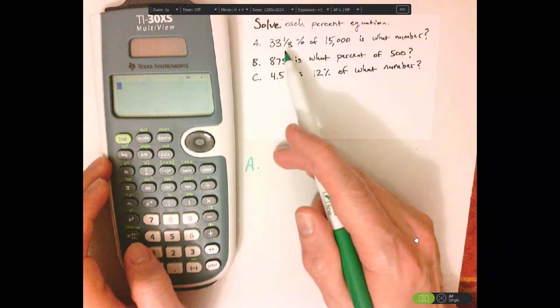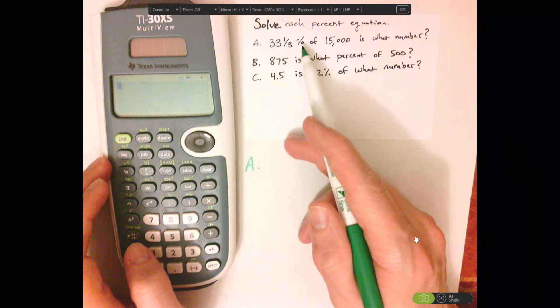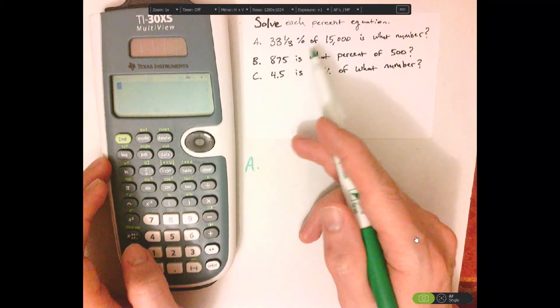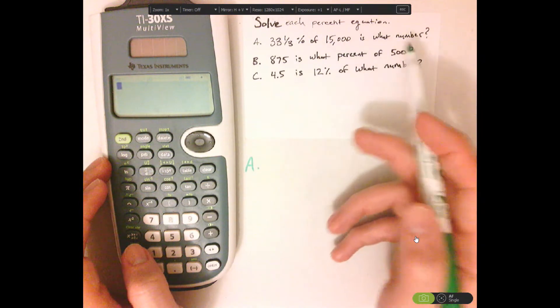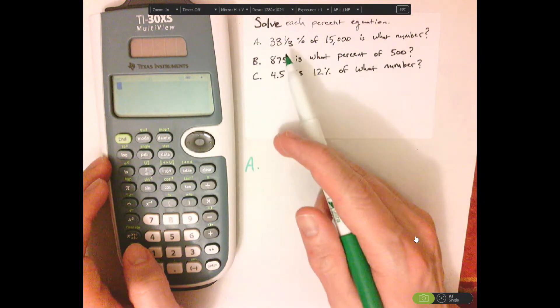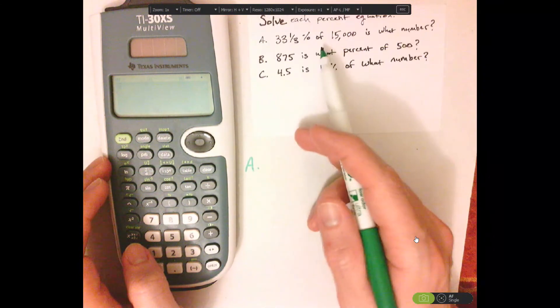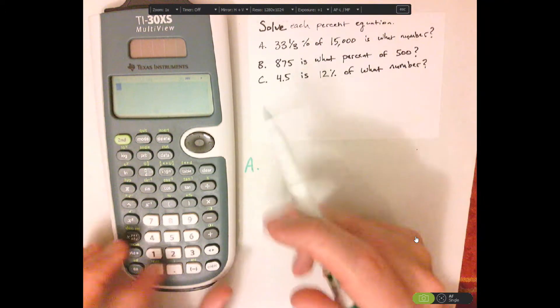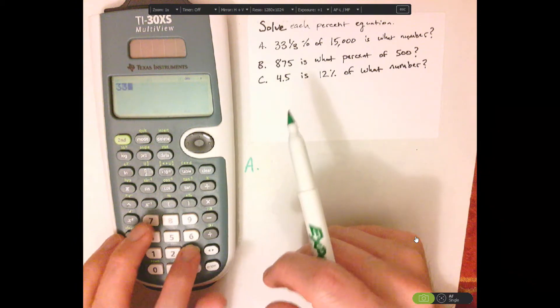Now we're going to take this 33 and a third percent. We're going to do 33 and a third percent of 15,000 is what number? So with this problem, you're just multiplying these, because 'of' means multiplication. So multiplying these values, so 33.